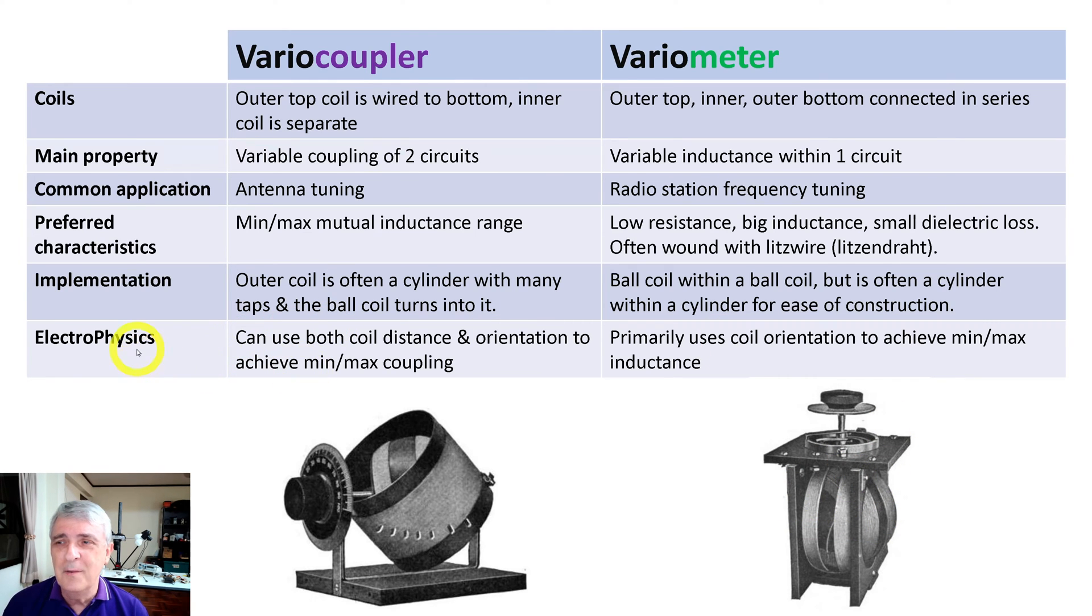And I wasn't sure what to call this - I call it electrophysics. So you can use both coil distance and orientation to achieve the minimum/maximum coupling. And on this one, you primarily use the coil orientation to achieve the minimum and maximum inductance.